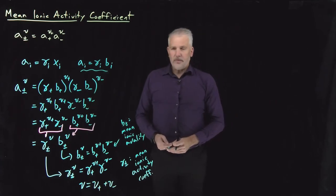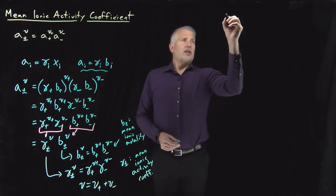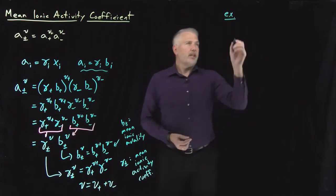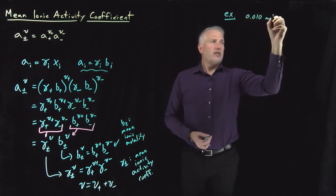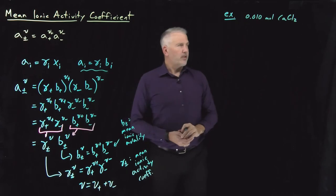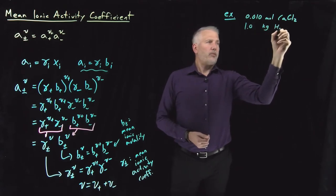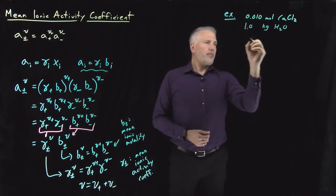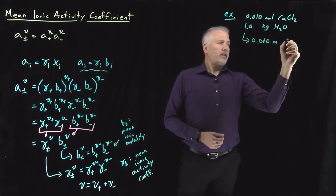Those definitions are a little bit abstract, so let's plug some numbers in to see what they mean for an actual electrolytic solution. Let's say we have a 0.01 molal solution — 0.01 moles — and to make it interesting, we'll take a one-to-two salt like calcium chloride in a kilogram of water. By definition, that's a 0.01 molal solution of calcium chloride.